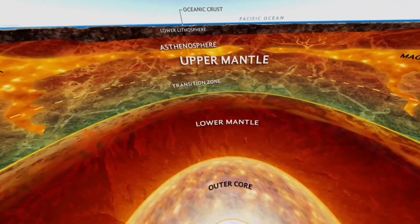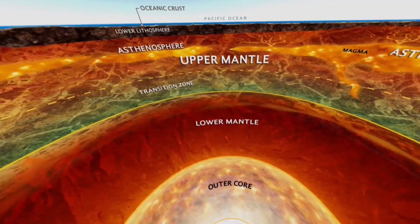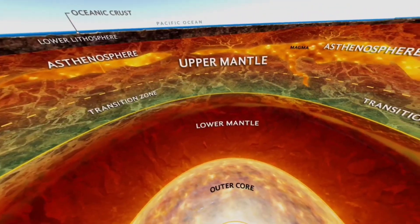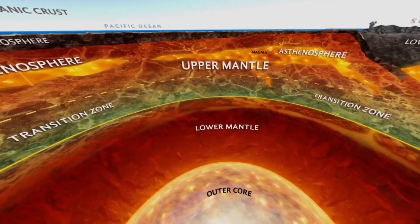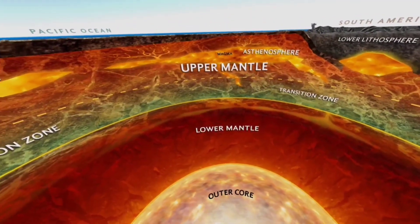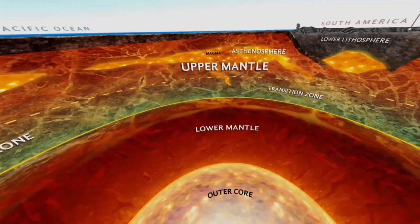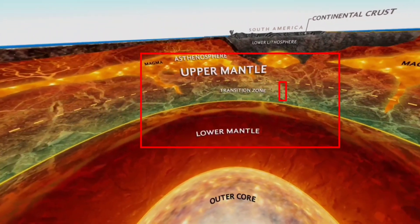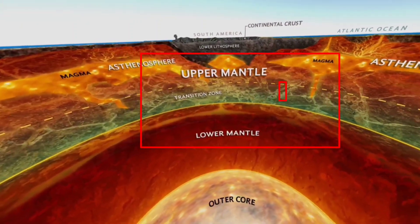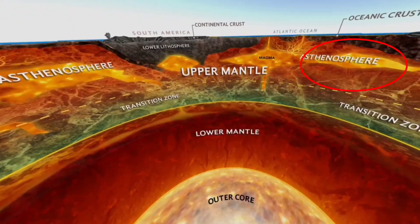The second layer is the mantle, a molten magma layer divided into upper mantle and lower mantle. The upper mantle together with the crust is known as the lithosphere — the sphere where life exists. The lower mantle is known as the asthenosphere, a semi-liquid layer covered with a thin layer of molten magma.